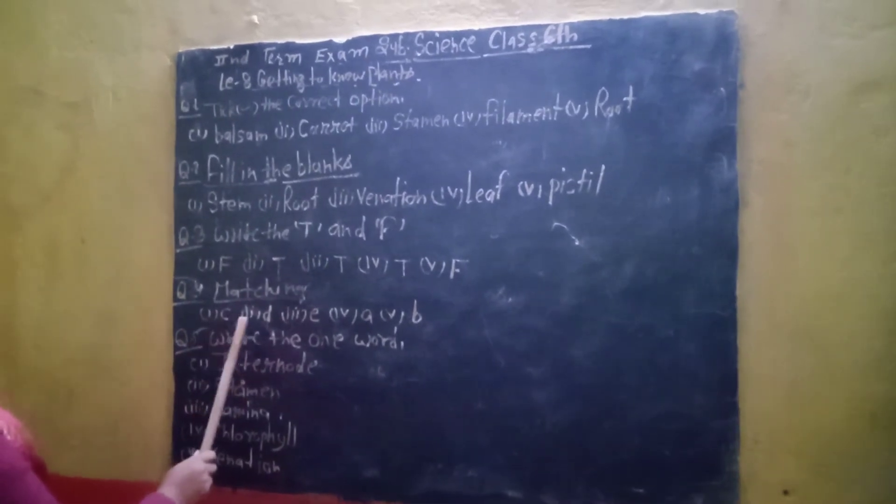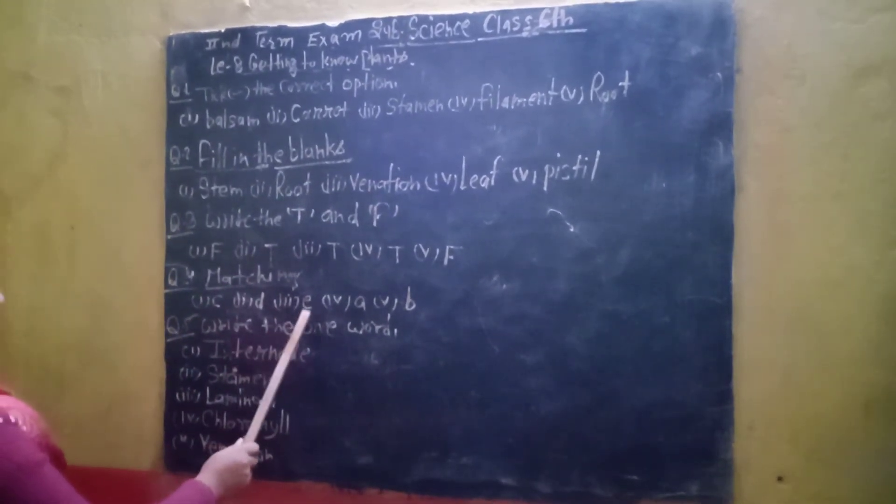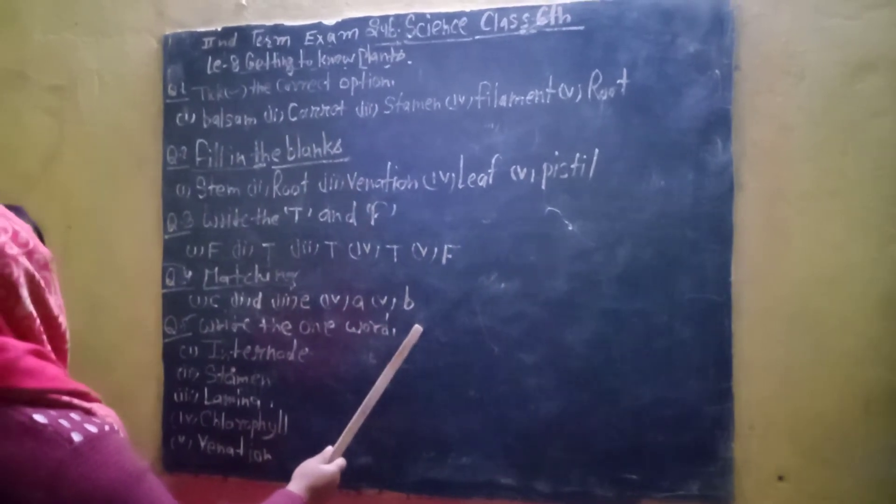Question No. 4 Matching. First Me C, Second Me D, Third Me E, Four Me A, Five Me B.